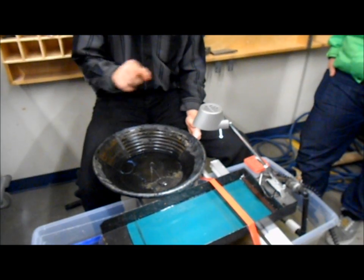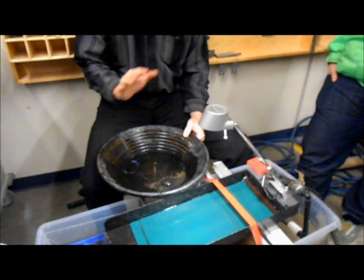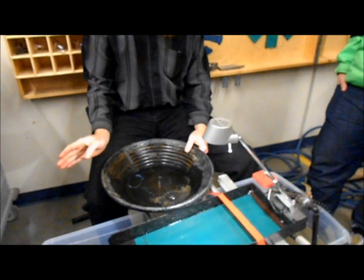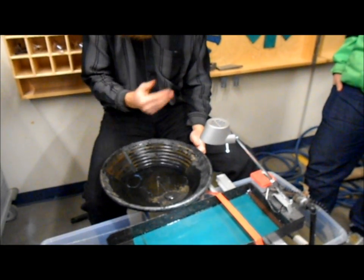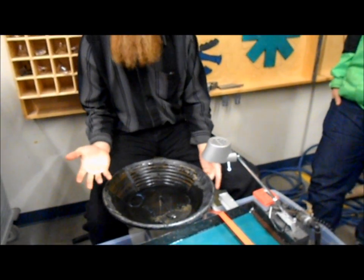The different gold recovery machines have different applications. Obviously the gold cube is when you have lots of stuff to go through. The blue bowl is great for fine stuff. It works for coarse stuff too, but it's just slow.